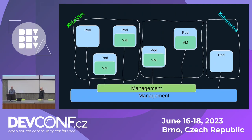Then came KubeVirt, which said: why not, since the ecosystem of managing Kubernetes is very similar to managing virtual machines, put VMs into pods? It sounds ridiculous, but it lets us use all the scheduling and nice management features that we had for pods and apply them to VMs as well. This is KubeVirt.